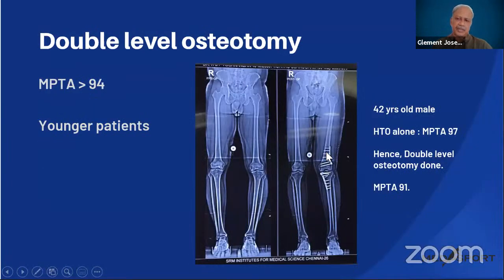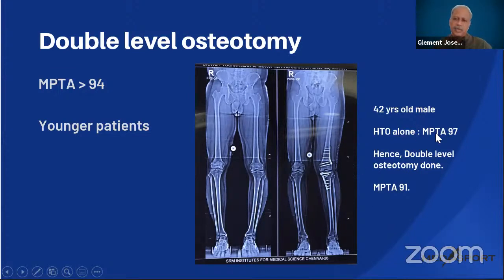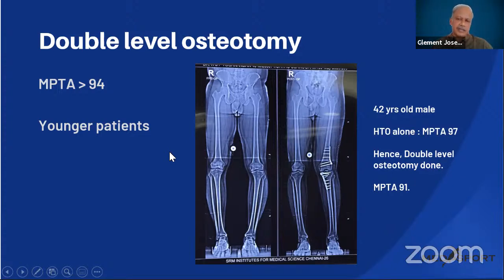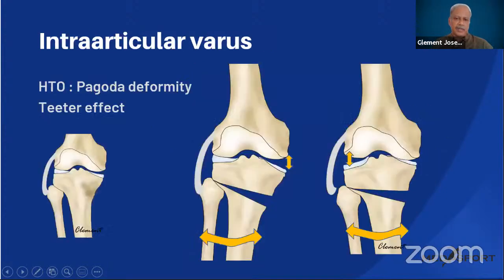For large corrections, it may be necessary to distribute the correction between the femur and tibia using a double-level osteotomy. For example, in a 42-year-old male where HTO alone would have resulted in an MPTA of around 97 degrees, a double-level osteotomy was performed, resulting in an MPTA of around 91 degrees. Always assess the resultant MPTA and consider whether a double-level osteotomy is needed.